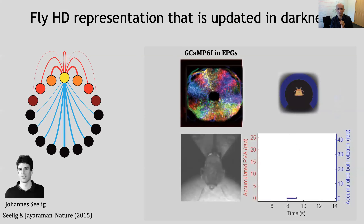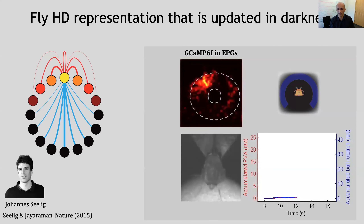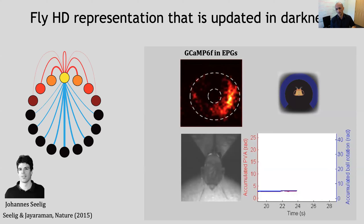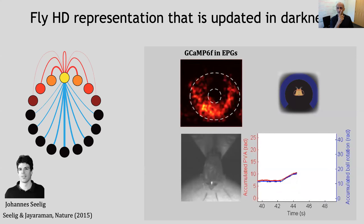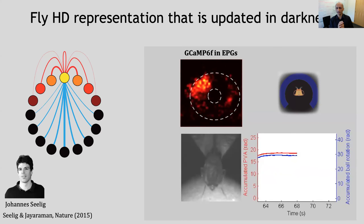Johannes Seelig, who was a postdoc in the lab, put a fly on a ball in a virtual reality setup. We've blacked out the arena so all it can see is darkness — even its eyes are blacked out. We're tracking ball rotations. What I want you to watch is what happens to the calcium activity in this population of neurons as the fly does its thing. On the plot below, we're tracking the population vector average — the direction of that bump of activity relative to the blue line, which is the actual accumulated rotation of the ball.